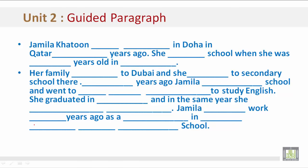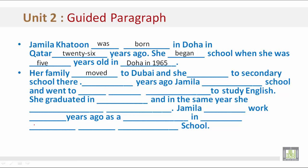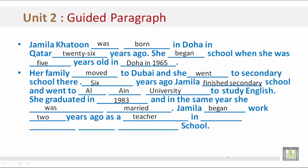Go back and forth between these slides for the answers. Jamila Khatun was born in Doha, Qatar, 26 years ago. She began school when she was five years old in Doha in 1965. Her family moved to Dubai and she went to secondary school there. Six years ago, Jamila finished secondary school and went to Al Ain University to study English. She graduated in 1983, and in the same year she was married. Jamila began work two years ago as a teacher in Al Ain Secondary Technical School.